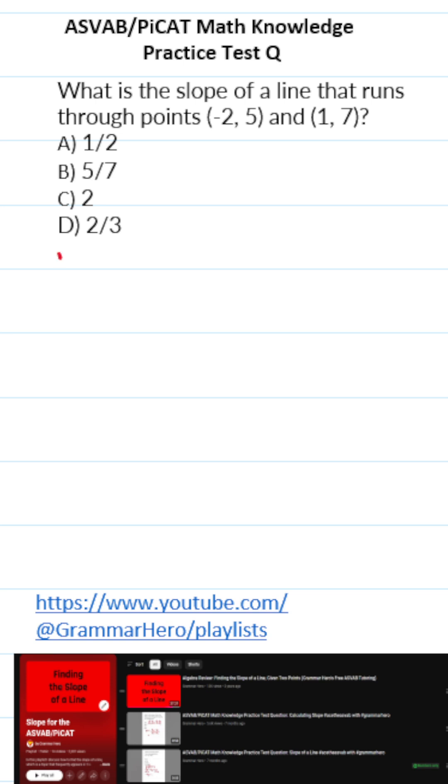Slope is found using the formula M. M refers to slope equals Y2 minus Y1 all over X2 minus X1.